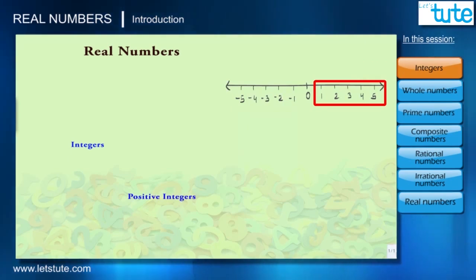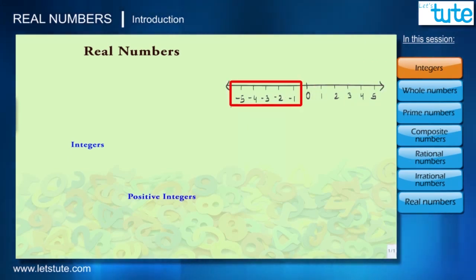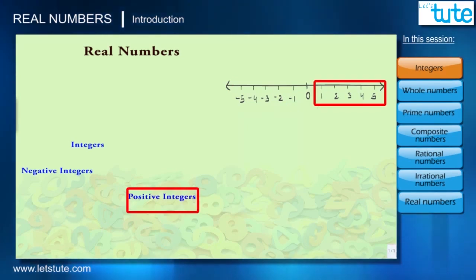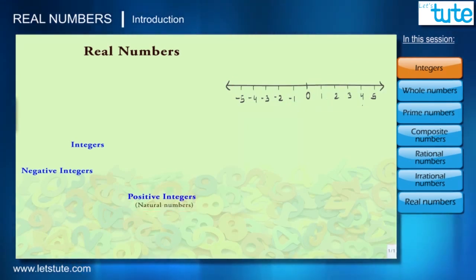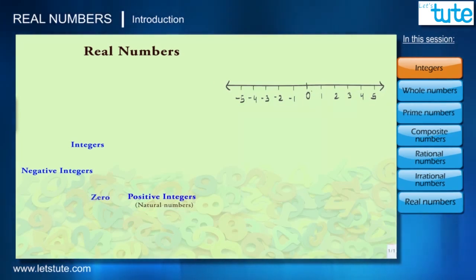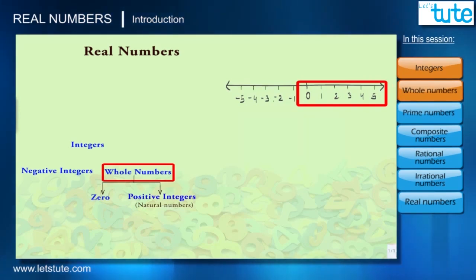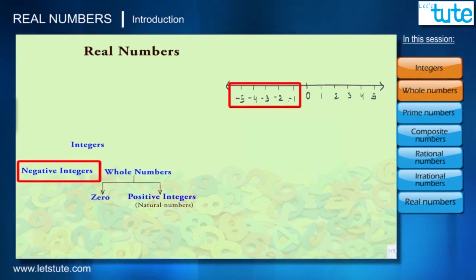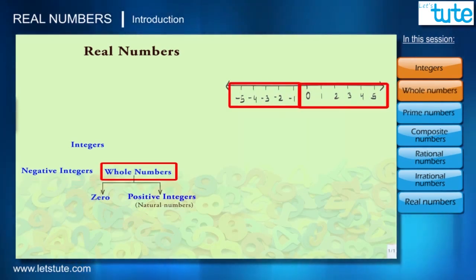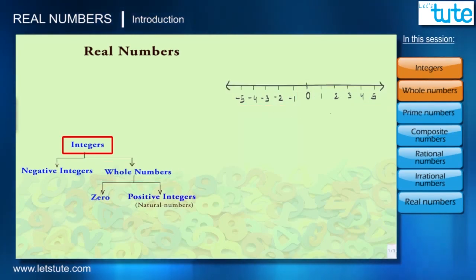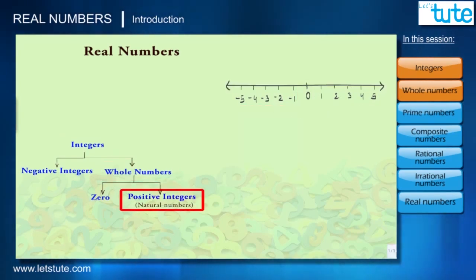These negative numbers, zero, and positive numbers — which are without fractions on the number line — are called integers. Positive numbers are called positive integers and negative numbers are called negative integers. Positive integers are also known as natural numbers, and if we take zero with only positive integers they are called whole numbers.